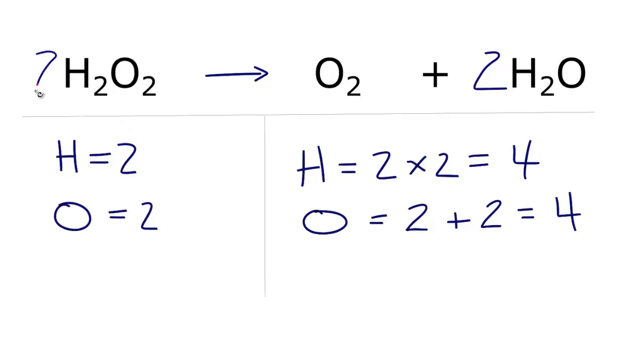If we put a two in front of the H2O2, we'll have two times the two here, that equals four, so the hydrogens are balanced. And then two times the two oxygens, that also equals four.